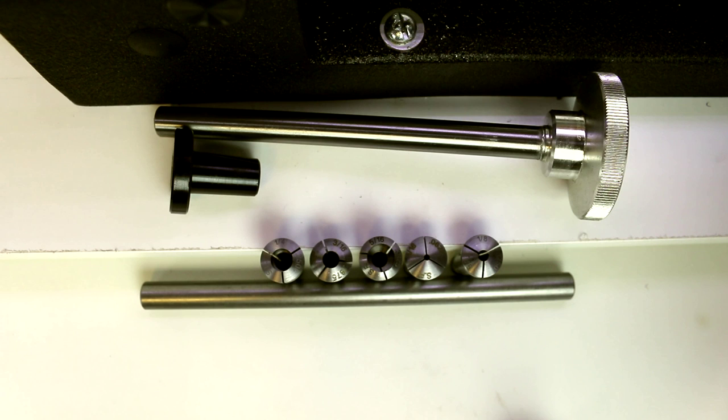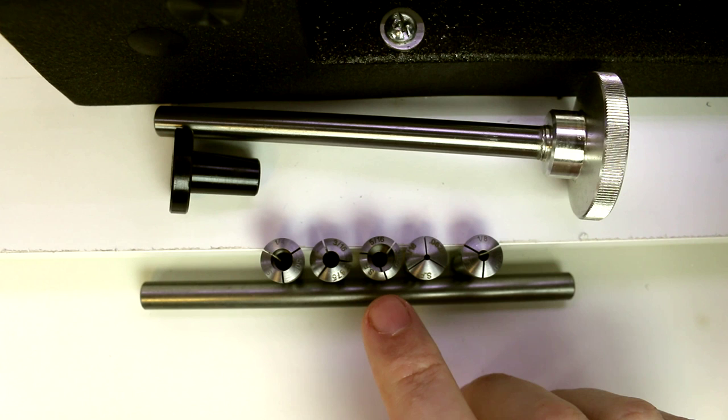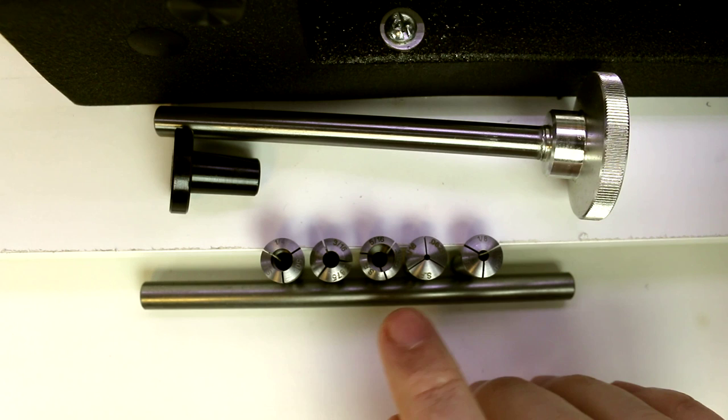So collets are going to be one of the fastest and most precise methods of work holding on your lathe. Now they do have a fairly limited range of sizes, particularly in these WW collets, and the WW collets also have a very limited clamping range as far as what size they're really designed to hold. They don't have a whole lot of adjustability, so for each size of material that you need to work on, you'd need a collet.